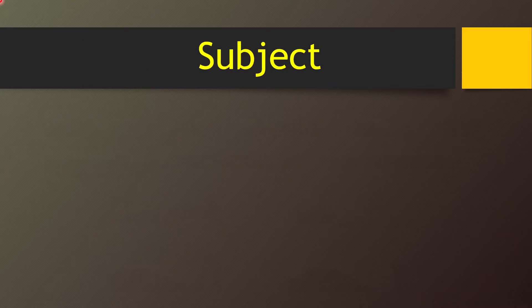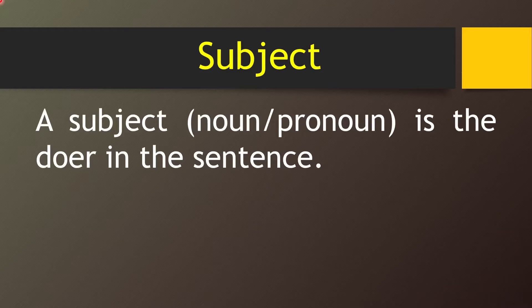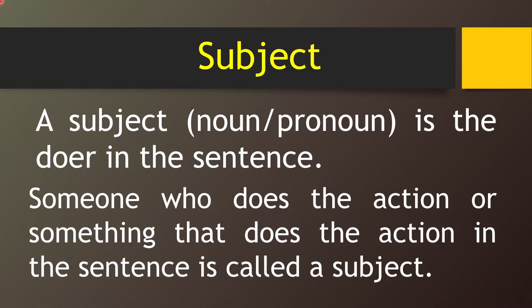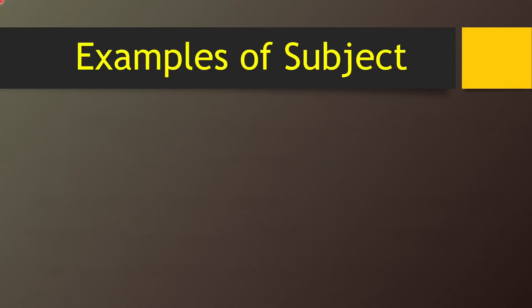Now let us know in detail about subject. A subject is the doer in the sentence. It can be a noun or a pronoun. Someone who does the action, or something that does the action in the sentence, is called a subject. Subject is the doer because subject does the action or activity in the sentence. Now let me give you some examples of subject.